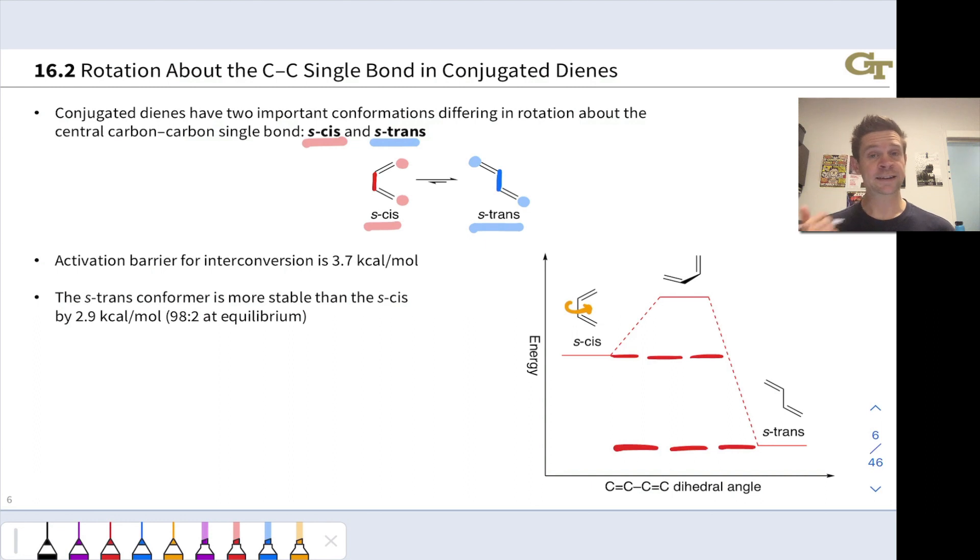These two conformers differ in energy, and there's an activation barrier to their interconversion. First, let's look at the energy difference between the conformers in a ground state sense, the thermodynamic free energy difference between the S-cis and S-trans conformers.